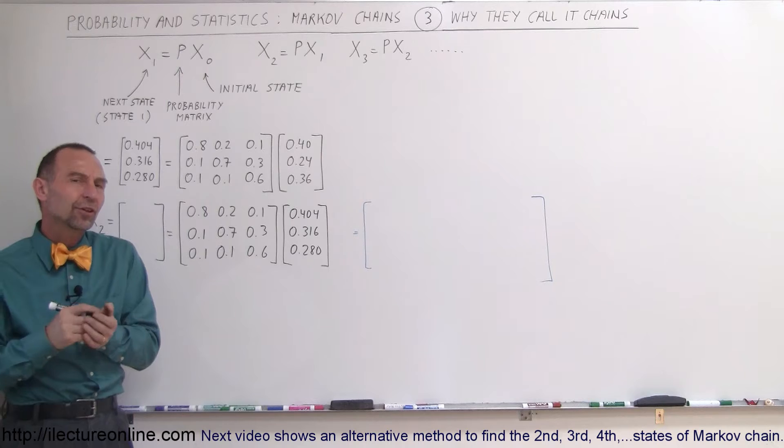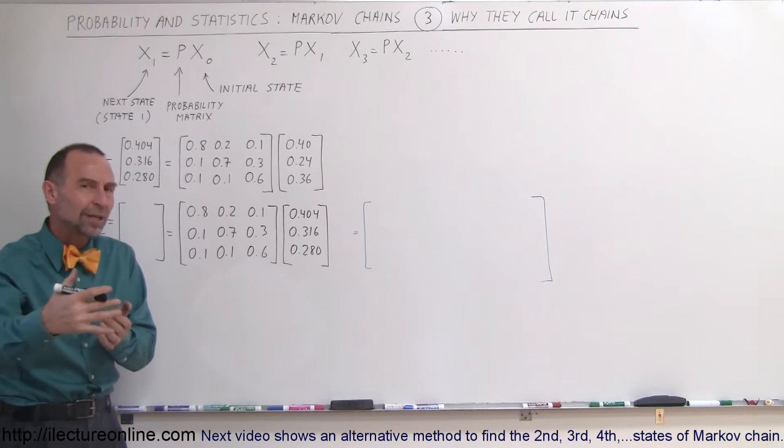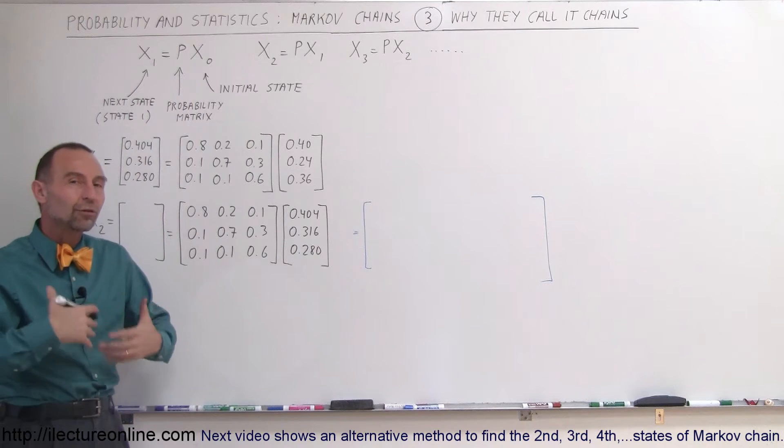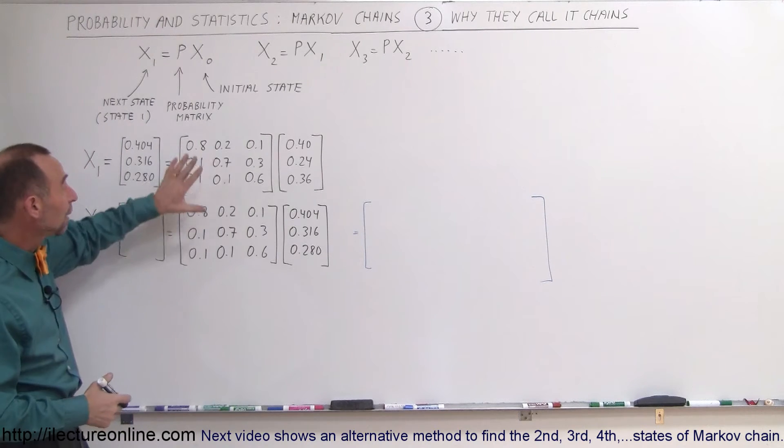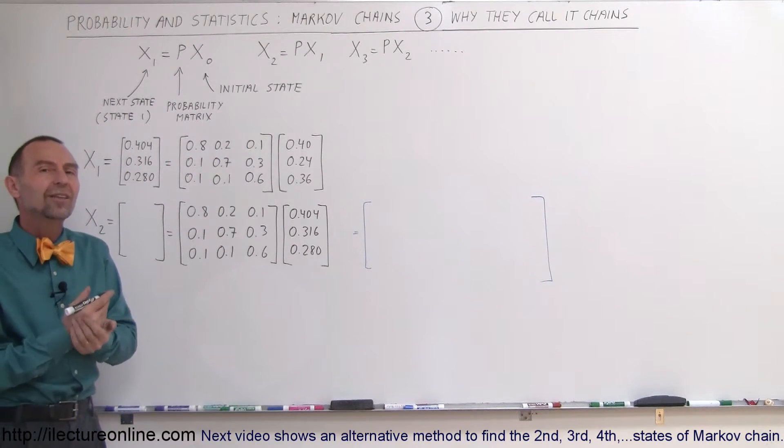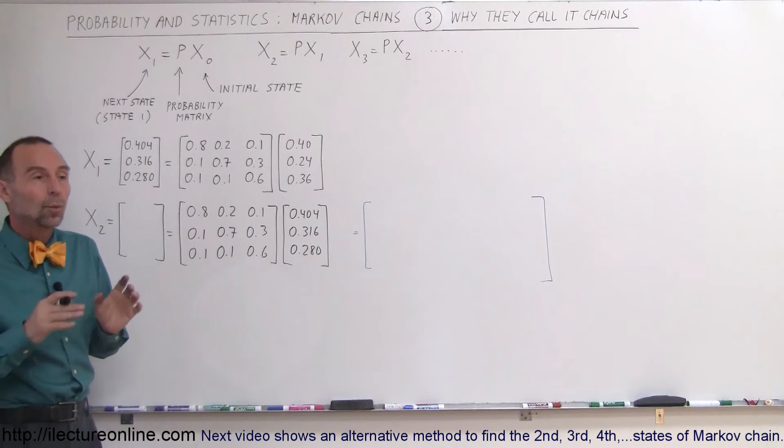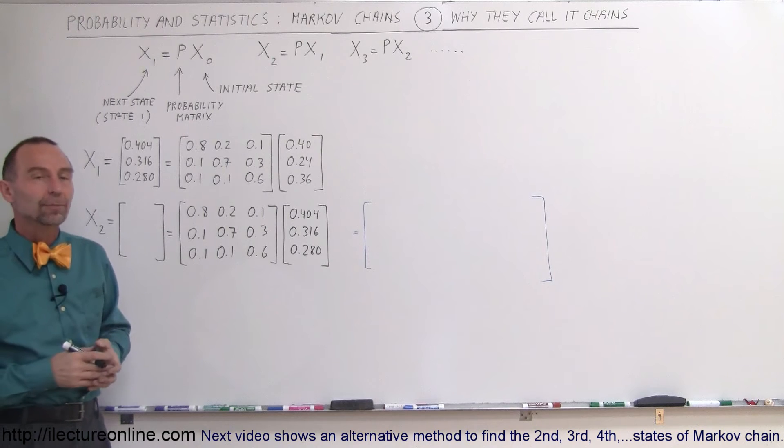But what if we want to know it for the third week, the fourth week, the fifth week, the sixth week, and so forth? Well, that's why we could do this transaction over and over again. As long as the probability matrix doesn't change, we can see where the customers will end up in the long run. What will be the end state of this particular situation?